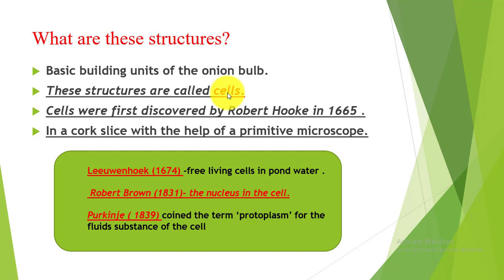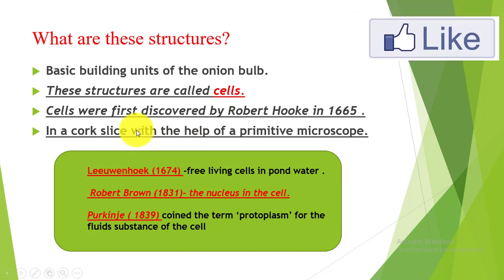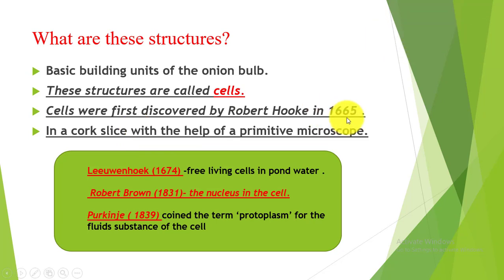Some organisms can live as a single cell on their own. This cell was first discovered by Robert Hooke in 1665. He observed a thin cork slice with the help of a primitive, self-designed, basic microscope — not the kind of microscope we use today.